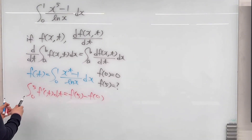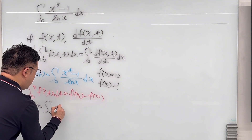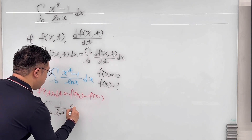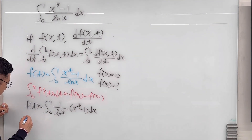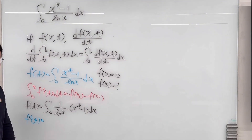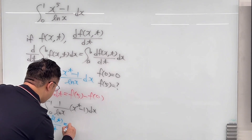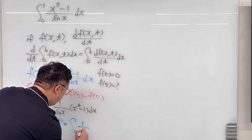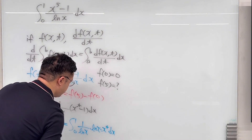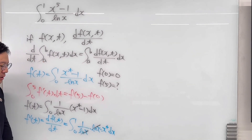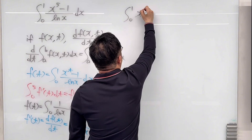Going back to f of t, let me rewrite this a little bit. f of t is the same as the integral from 0 to 1 of 1 over ln of x times x to the power of t minus 1, dx. Then f prime of t, the derivative of f of t with respect to t, has to be the integral from 0 to 1 of 1 over ln of x times ln of x times x to the power of t, dx. So we can cancel this ln of x out.